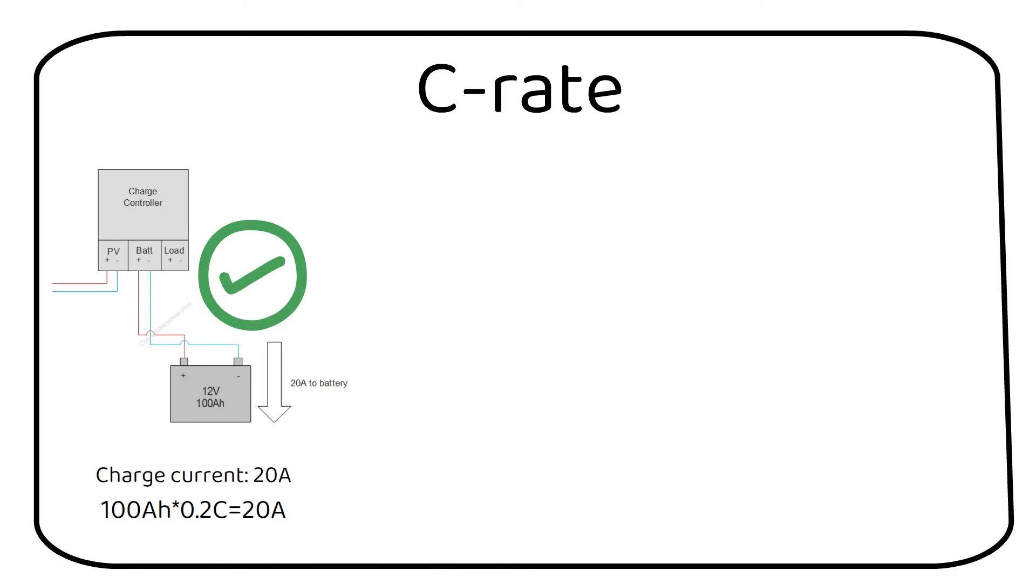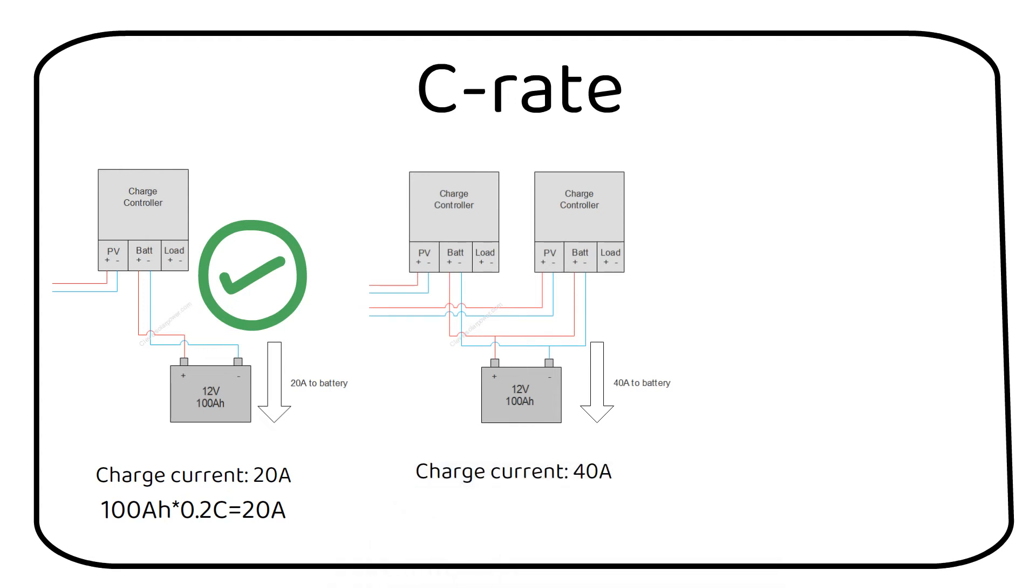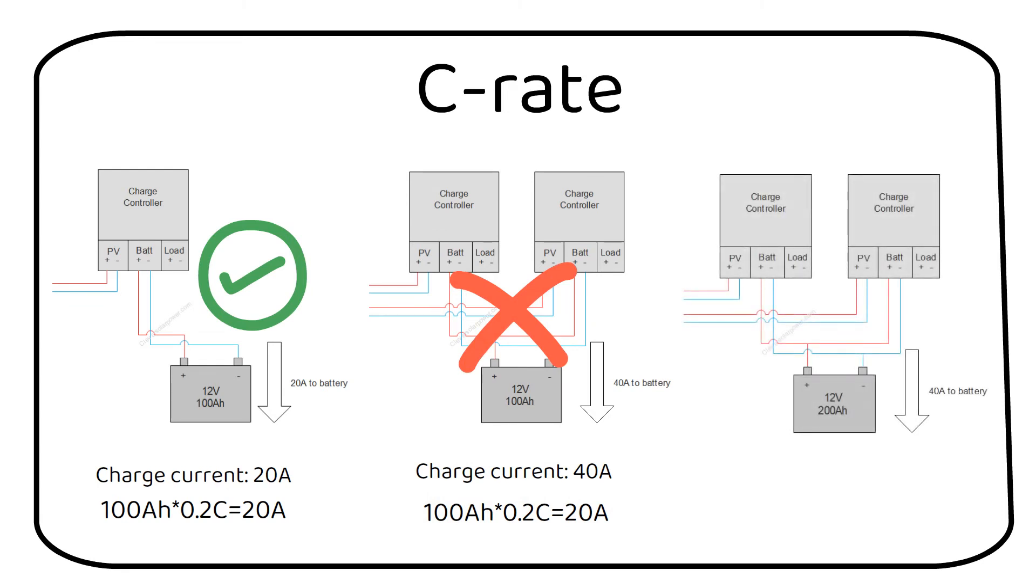Now if you want to add a second charge controller that will charge the battery with another 20 amps you will have 40 amps of charging current. This will increase the temperature of the battery and lead to degradation. In this case you should add another battery in parallel to increase the capacity of the battery.